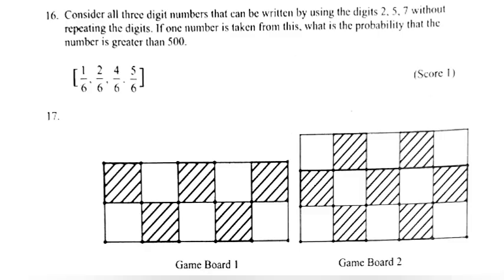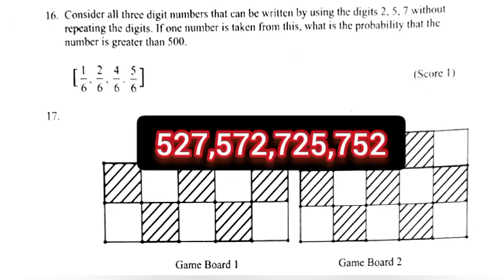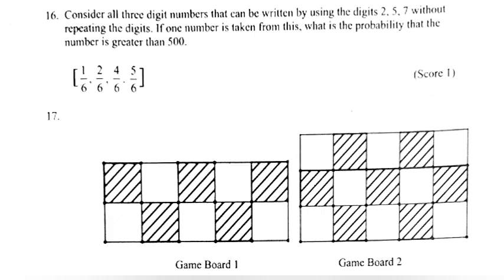16. Consider all 3 digit numbers that can be written by using the digits 2, 5, 7 without repeating the digits. If 1 number is taken from this, what is the probability that the number is greater than 500? Answer: 4 by 6. Possible numbers 527, 572, 725, 752.